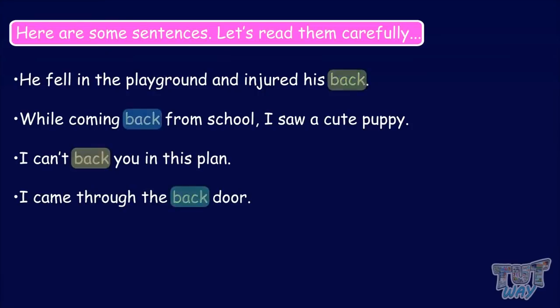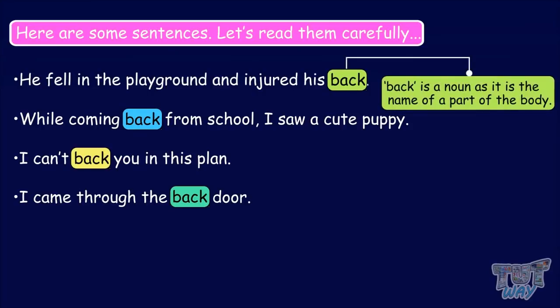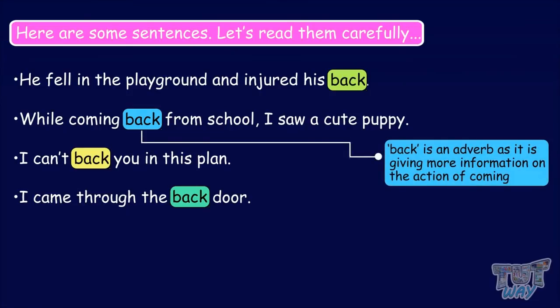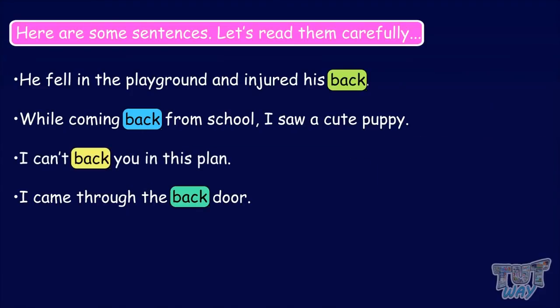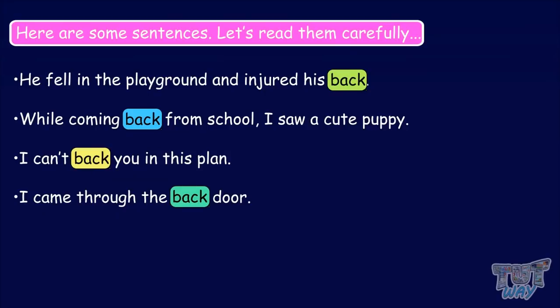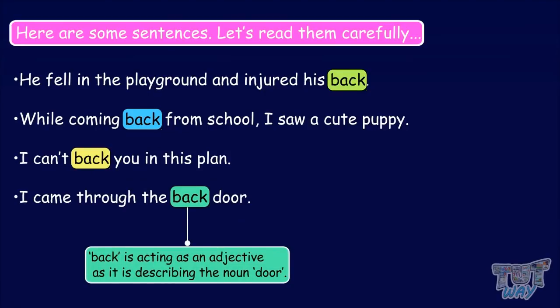You can see that the word 'back' is used in four sentences in four different ways. In the first sentence, the word back is a noun as it is the name of a part of the body. In the second sentence, the word back is an adverb as it is giving more information on the action of coming. In the third sentence, the word back is a verb as it's describing an action. And in the fourth sentence, the word back is acting as an adjective as it is describing the noun door.